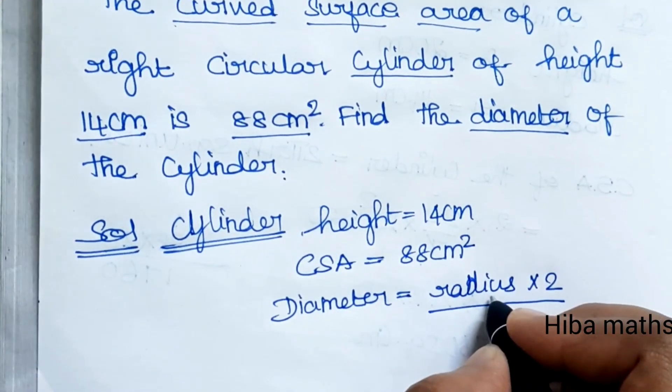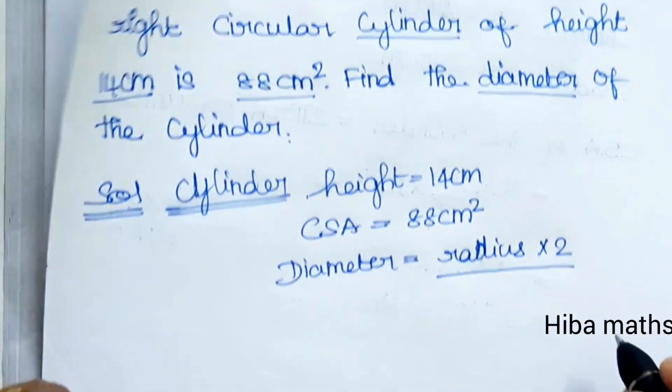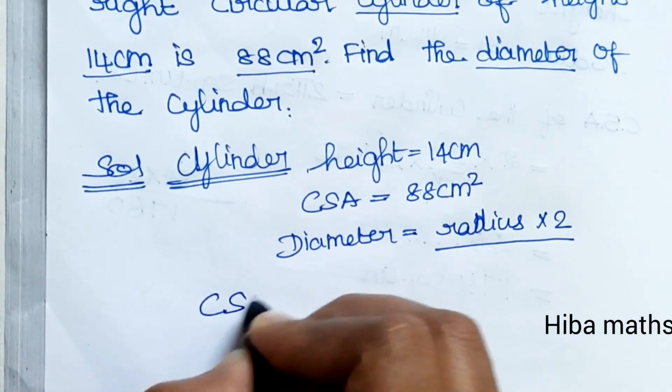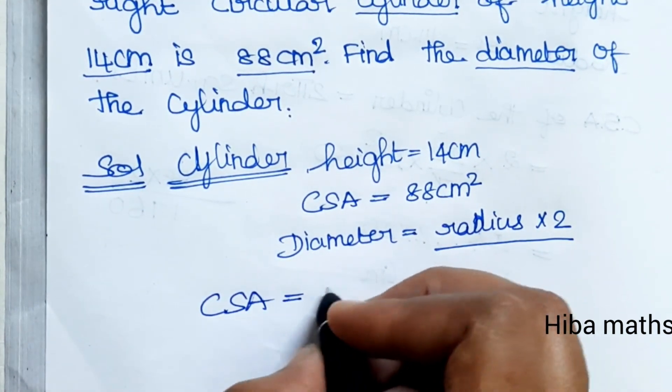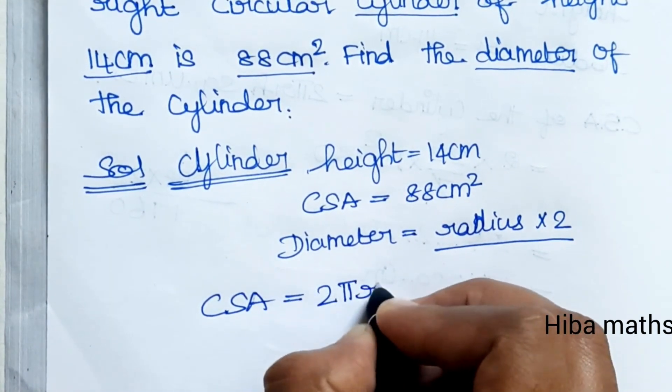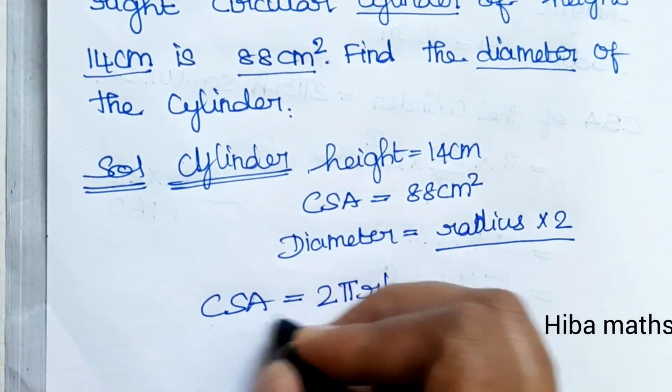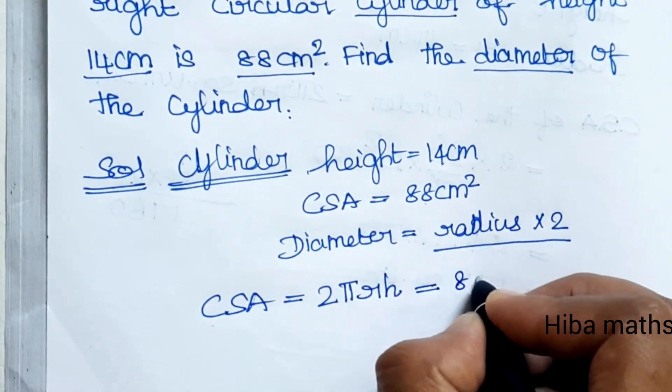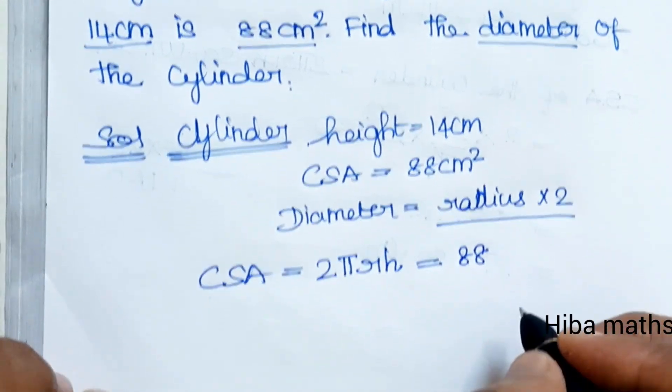We need to use the CSA formula: 2πRH. This CSA formula equals 88 cm².